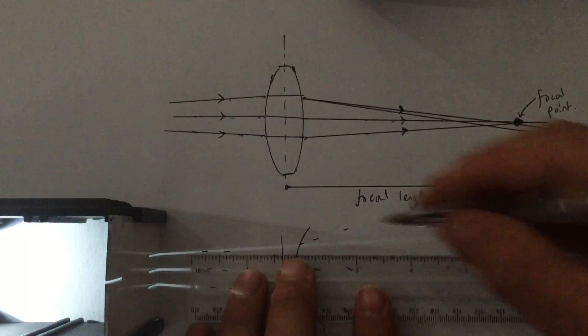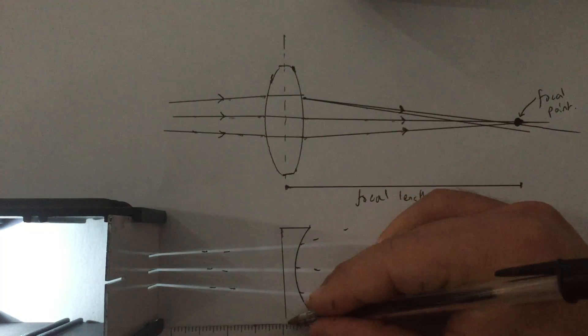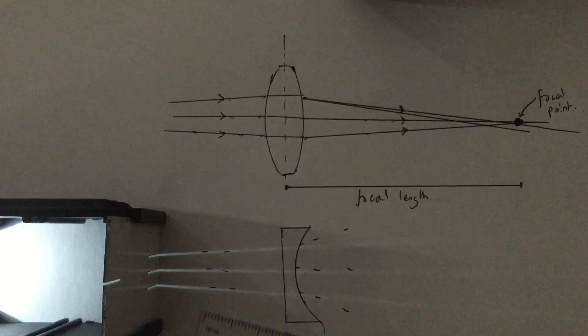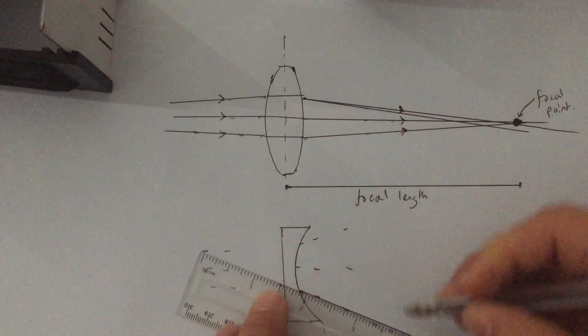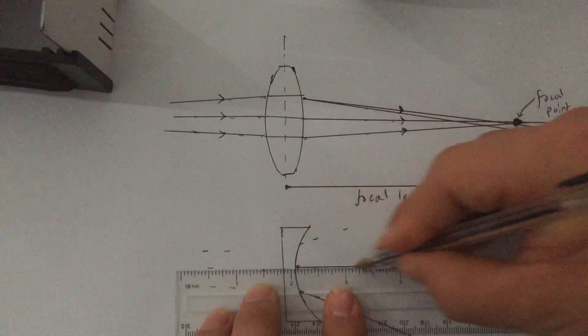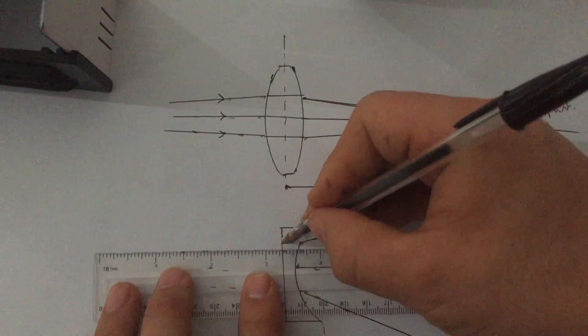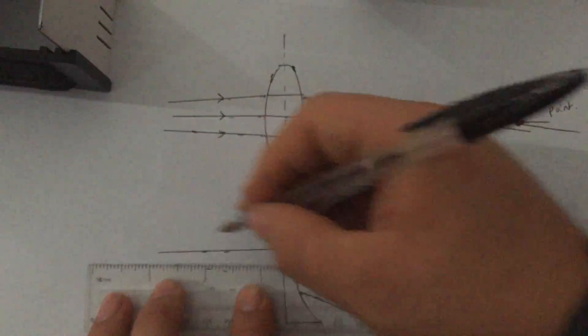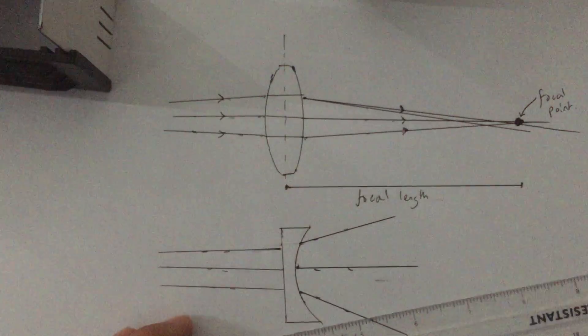Let me just join up the actual edges of the lens. In this particular case, with a concave lens, you can see that the rays of light spread out. They deviate, or they diverge. So when they hit, the effect of the lens is a concave lens.